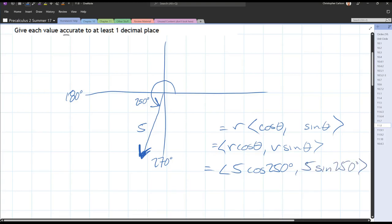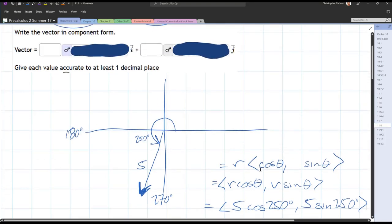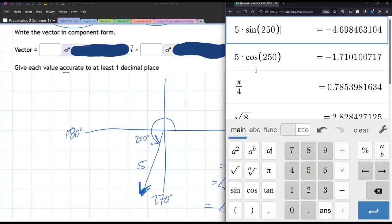Two fifty is not a degree that we know about. Two forty would be, and two seventy, but we don't know cos and sine of two fifty. However, I've typed them into the calculator already. I'm going to put that on the screen. Make sure you're in degree mode, and this is a Desmos scientific calculator. So there's five sine two fifty and five cos two fifty.